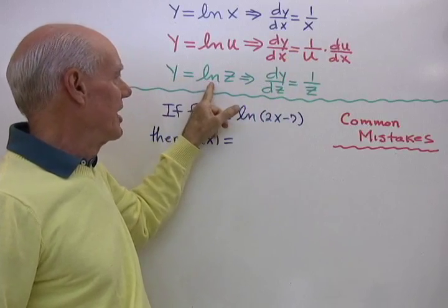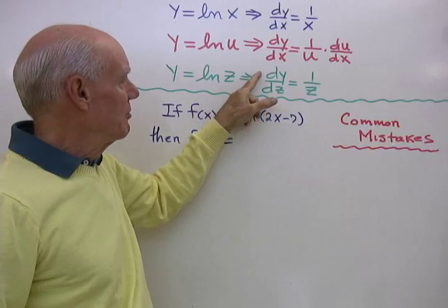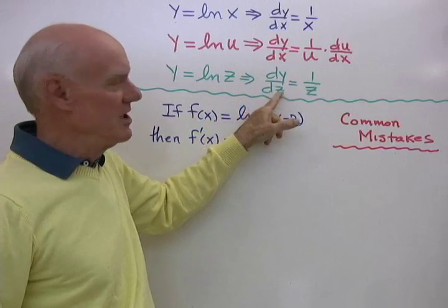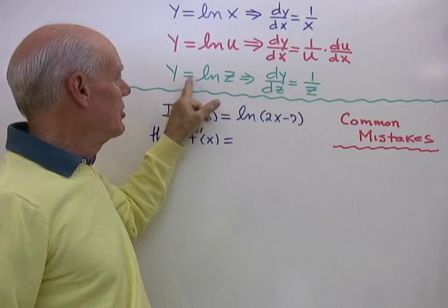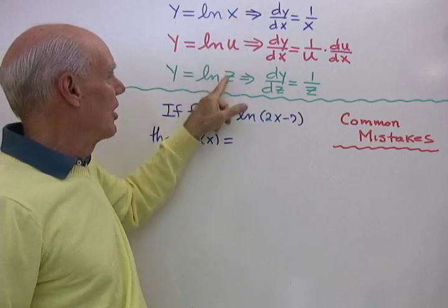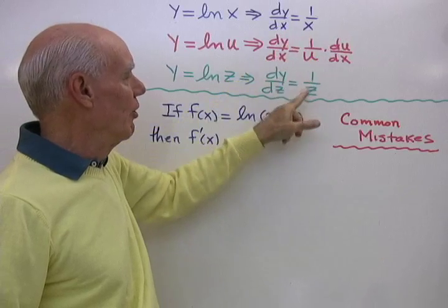Likewise if y is equal to natural log z, then the derivative of y with respect to z is 1 over z. So whenever you're differentiating with respect to this argument right here, you just get 1 over the argument.